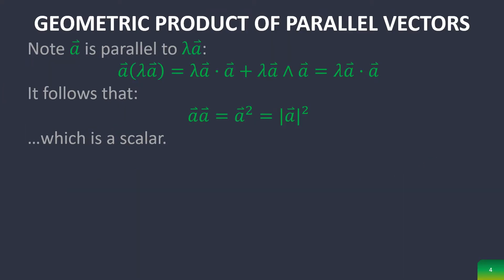If we're representing the geometric product of parallel vectors, this actually ends up being a scalar. As a visualization, if you remember, the inner product looks at two vectors and overlays one vector onto another, and then it multiplies the magnitude of these two vectors, giving you a scalar.